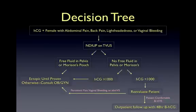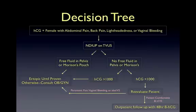While any pregnant female with an NDIUP should be evaluated for ectopic pregnancy, if free fluid is visualized in such a patient, that patient has ruptured ectopic until proven otherwise and an OBGYN should be consulted immediately. If the beta-HCG is under 1,000 and the patient is well-appearing with normal vital signs, it is reasonable to discharge her after discussing with OBGYN and arranging prompt follow-up in 48 hours.